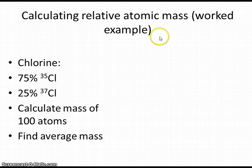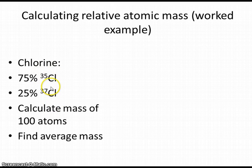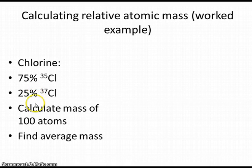Here's a particularly simple worked example using the element chlorine. Chlorine atoms are introduced into a mass spectrometer, made to move, and the detector picks up the different isotopes. There are two of them: chlorine-35 and chlorine-37, and they have very different abundances — there's about three times as much chlorine-35 as chlorine-37. We imagine working out the mass of 100 atoms and then finding the average mass of those 100 atoms.